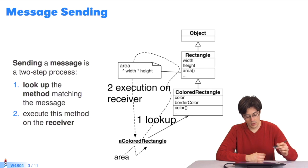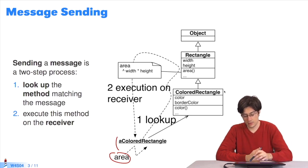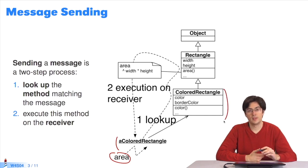I'll review message sending briefly. The area message is sent to ColoredRectangle. First, the algorithm looks up the method matching the message. It starts by searching for the method in the receiver's class. If it finds area in ColoredRectangle, it executes it.